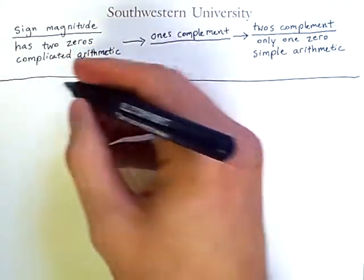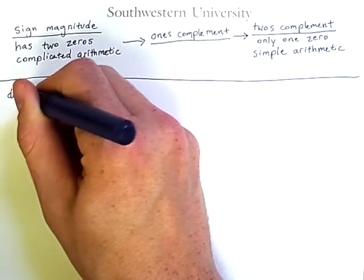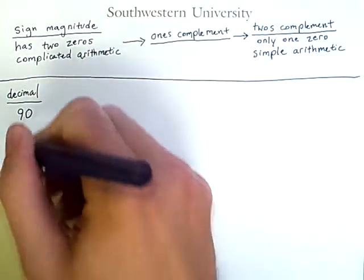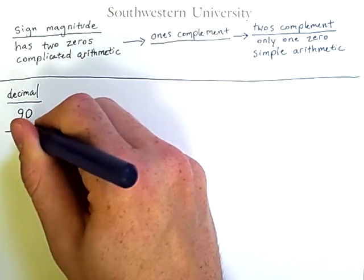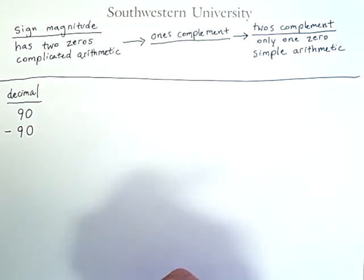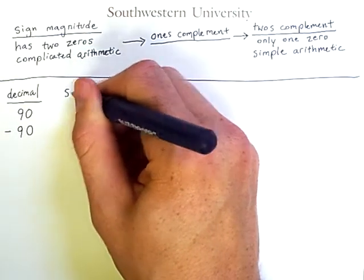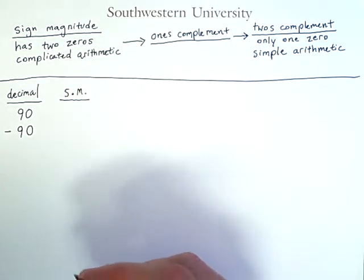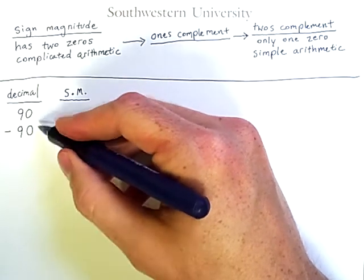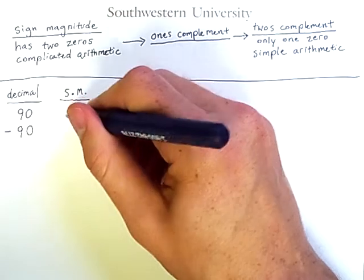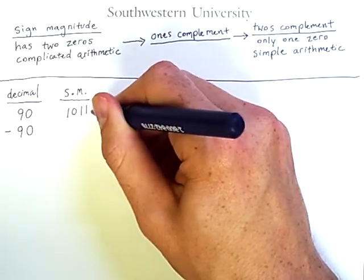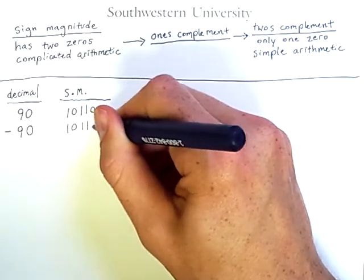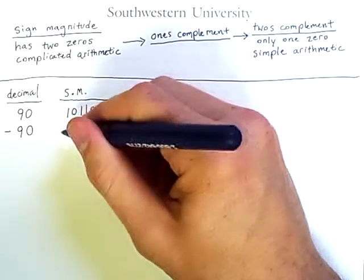Let's start with the decimal number 90. And at the same time, we'll also convert negative 90, so that you can see the contrast between how they're handled. Now in sign magnitude representation, we know that we can compute the binary value of 90, which incidentally is 1 0 1 1 0 1 0.